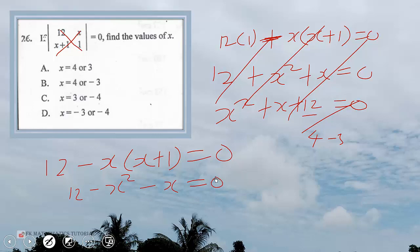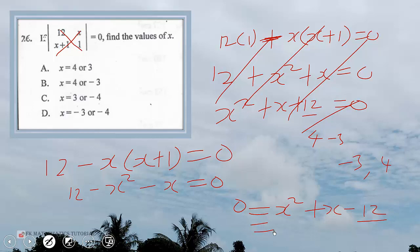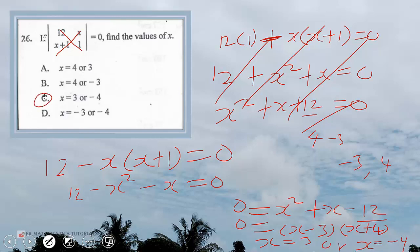Rearranging, we have x squared plus x minus 12 equals 0. Finding two factors of negative 12 that add up to 1: that's negative 3 and 4. So the factors are (x minus 3)(x plus 4) equals 0. Therefore x equals positive 3 or x equals negative 4. Option C is correct.